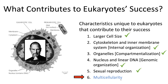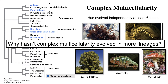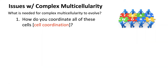We've already talked about multicellularity and what it is. If you haven't seen that lecture, please go check that out before this one. We left off talking about the fact that multicellularity has evolved at least six times independently in different eukaryotic groups: animals, fungi, red algae, green algae, and brown algae. But it hasn't evolved in many other eukaryotic groups. So why hasn't complex multicellularity evolved in other lineages? Let's talk about some of the impediments or obstacles that organism groups have to overcome for multicellularity to evolve.